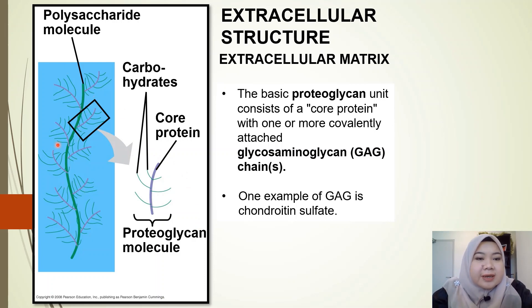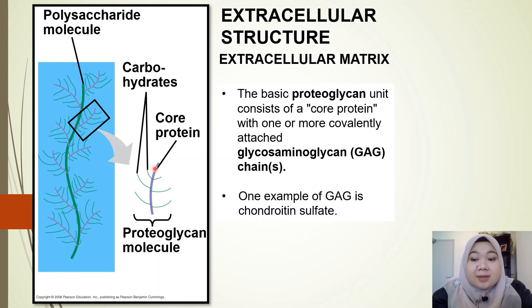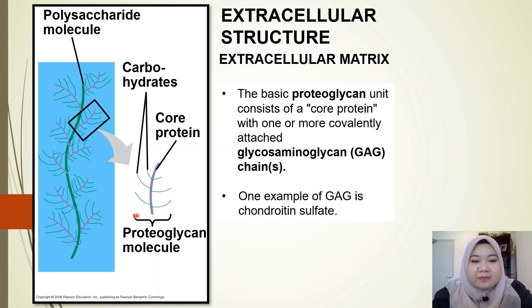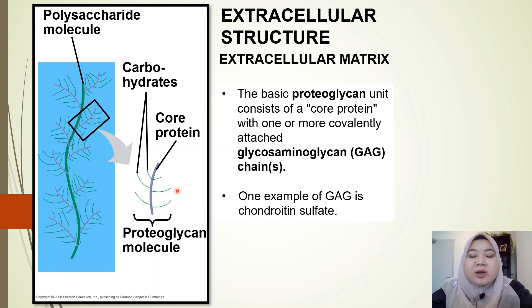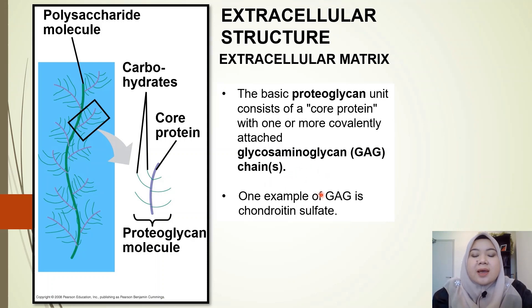Taking one branch of the proteoglycan, you can see the core protein in purple and the carbohydrate chains in green. The basic proteoglycan unit consists of a core protein with many carbohydrate chains attached to it. These carbohydrate chains are called glycosaminoglycan, or GAG — a polysaccharide made of repeating disaccharide units. There are around four groups of GAG, one of which is called chondroitin sulfate.